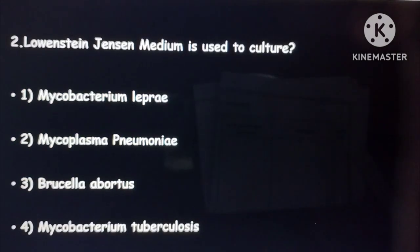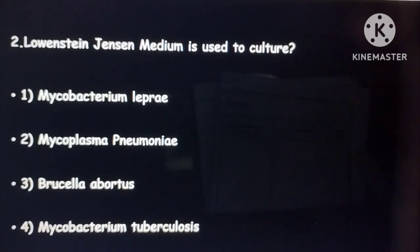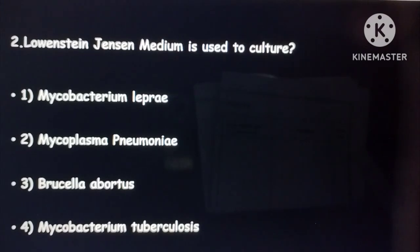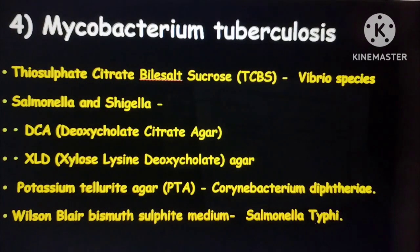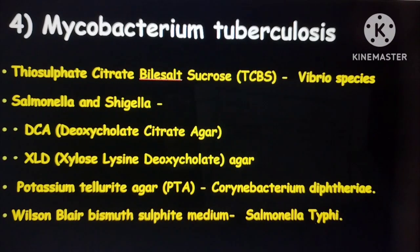The second question: Löwenstein-Jensen medium is used to culture which organism — Mycobacterium leprae, Mycoplasma pneumoniae, Brucella abortus, or Mycobacterium tuberculosis? The answer is Mycobacterium tuberculosis — it is a selective medium for Mycobacterium tuberculosis. Also remember: for Vibrio cholerae, the selective medium is thiosulfate citrate bile salt sucrose (TCBS) medium.